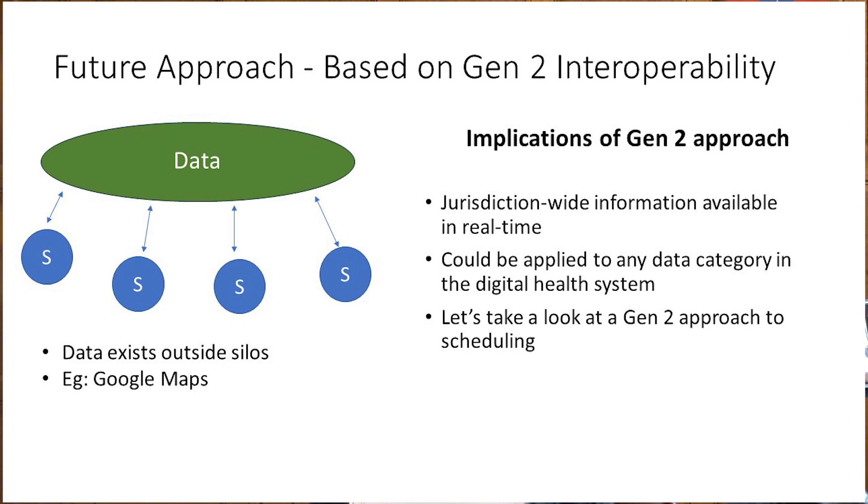Kareem and I identified another type of interoperability we're calling generation two interoperability. It works differently because the silos and users have a bi-directional flow of data, and the data sits independent and outside of the silos, yet everywhere at all times. Something we're all probably familiar with is mapping services — say Google Maps. The users are constantly providing information to the system, and the system is providing information to the users, such as their location. If there's an accident, they can determine how long it's going to take to get somewhere based on other people's data, whether there's traffic.